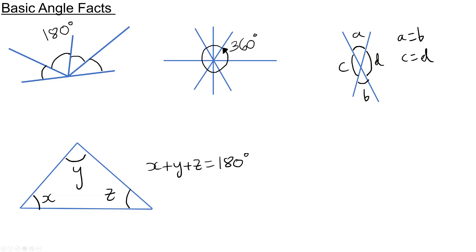These are our basic angle facts. Angles in a straight line add up to 180 degrees. Angles around a point add up to 360 degrees. If I have two lines that cross, the vertically opposite angles formed are equal. And finally, angles in a triangle add up to 180 degrees. If we know these properties, we can solve a lot of different problems to do with angles.